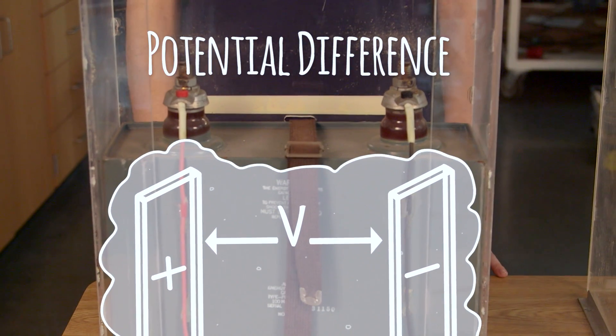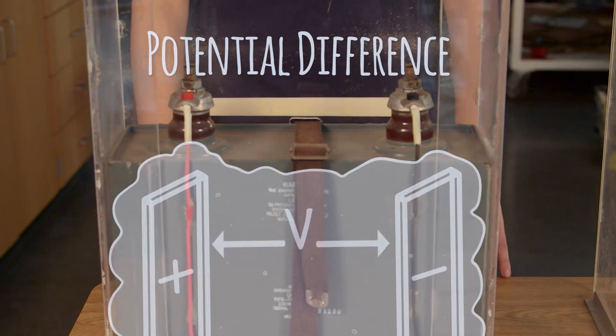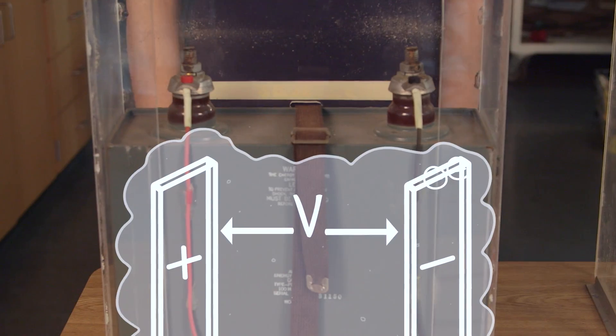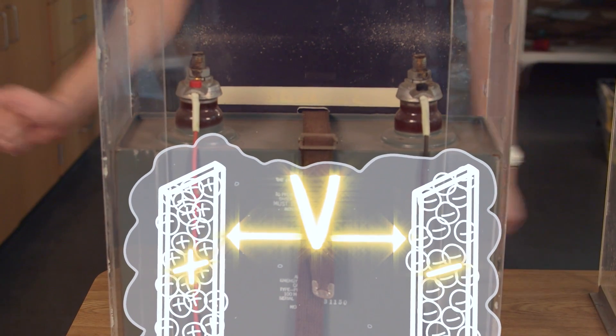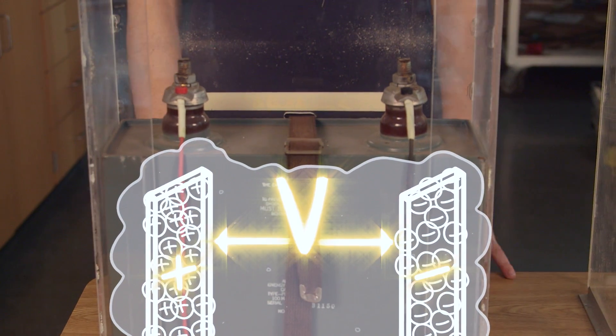This creates a potential difference, some voltage across the capacitor. Potential difference is kind of like potential energy. The more charge you build up between the plates, the more voltage you have, and the more energy you have stored in the capacitor.